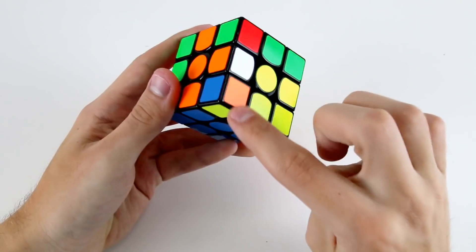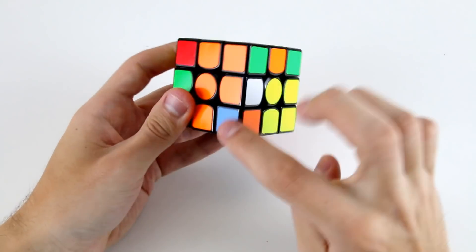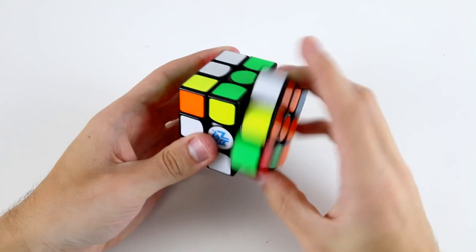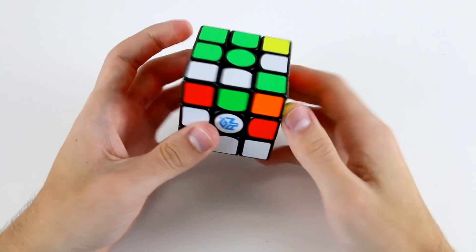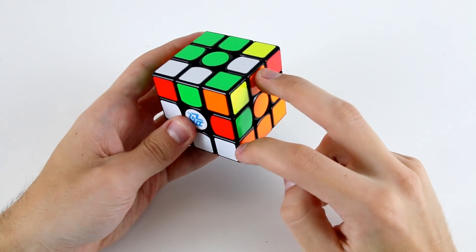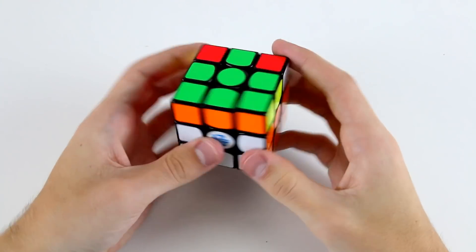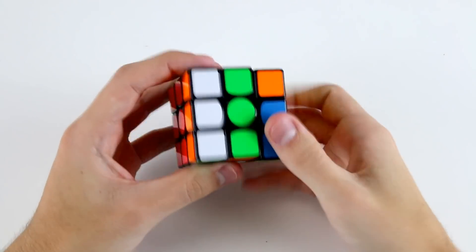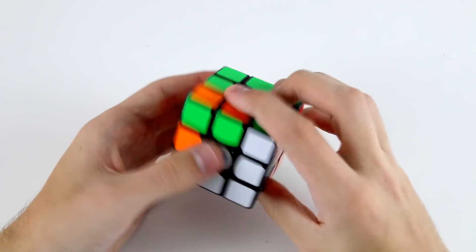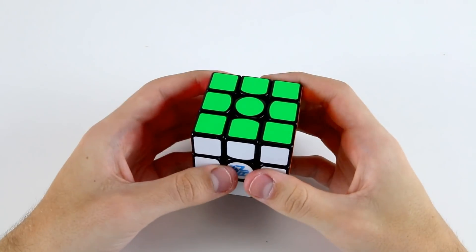Then I've got this one and this one as my next pair so I'll probably rotate yet again, insert it into the back right position. Then I've got this F2L case where I just need to insert one edge. Now I have OLL and J permutation for PLL, so a pretty easy last layer.